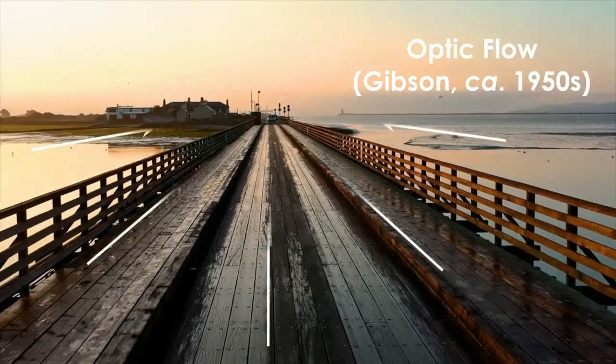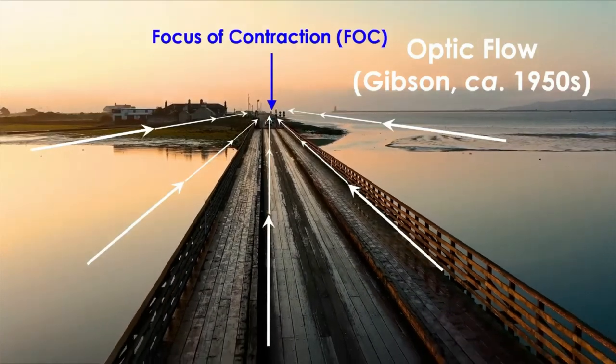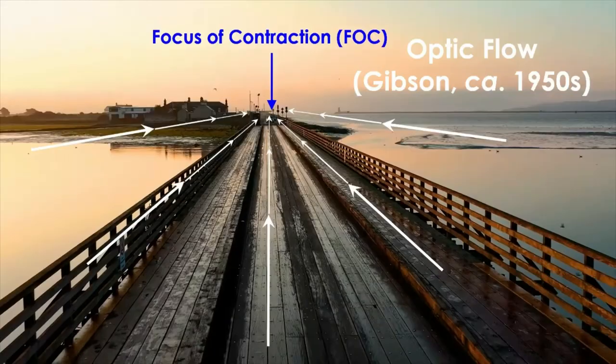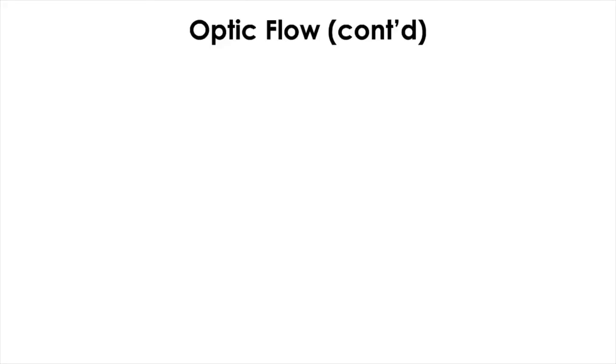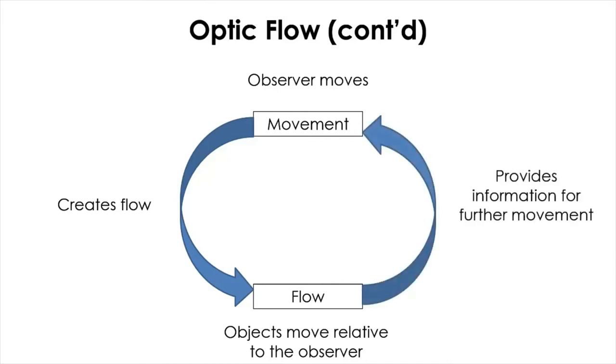Now, this drone cam clip shows an opposite pattern to the previous one where everything is moving away from the viewer and sucked into a point in distance called the focus of contraction. As we've just seen, optic flow is self-generated information. When observer moves, flow occurs by the movement of the observer and it keeps flowing as long as she or he is in motion. Once the flow is created, then the objects around the observer move relative to the observer provides more information for the next movement. The optic flow is a good cue to determine where we are in the environment. It differs from other cues because it is determined by our own actions.